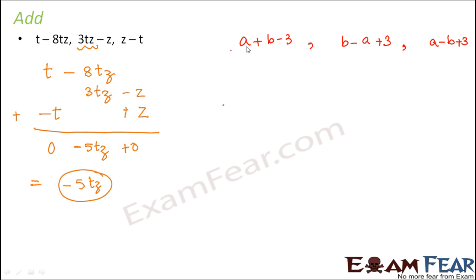In the first expression, you have a, b, and minus 3 as the three terms. In the second expression, you have b minus a and 3 as the three terms. And in the third one, you have a minus b and 3. So let us try to add them.